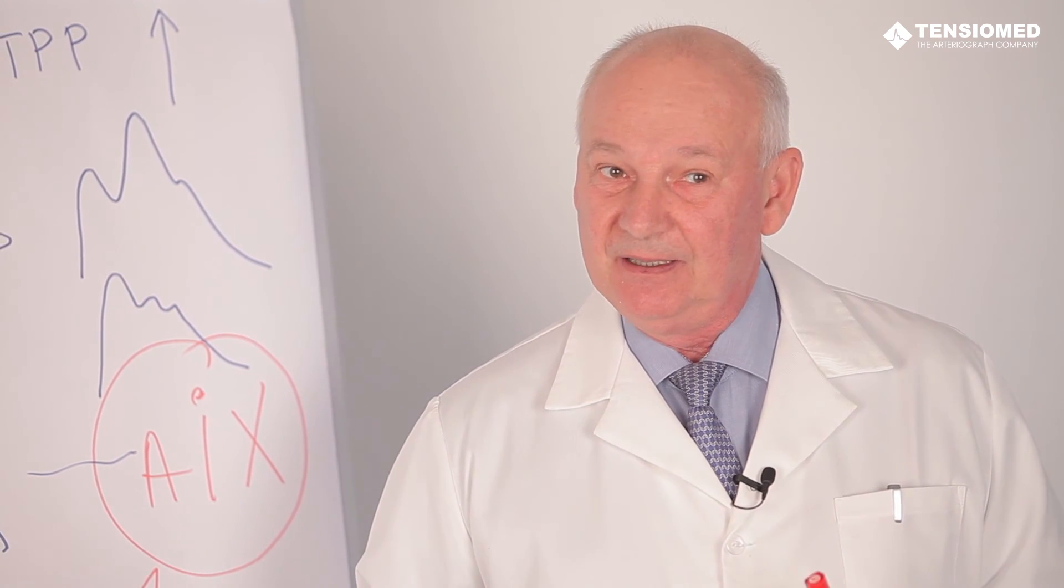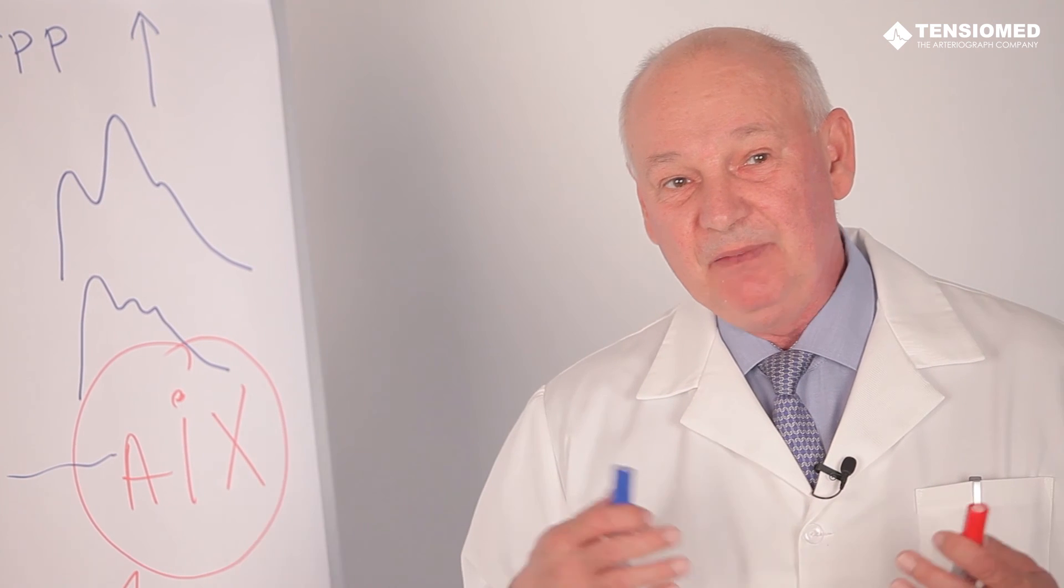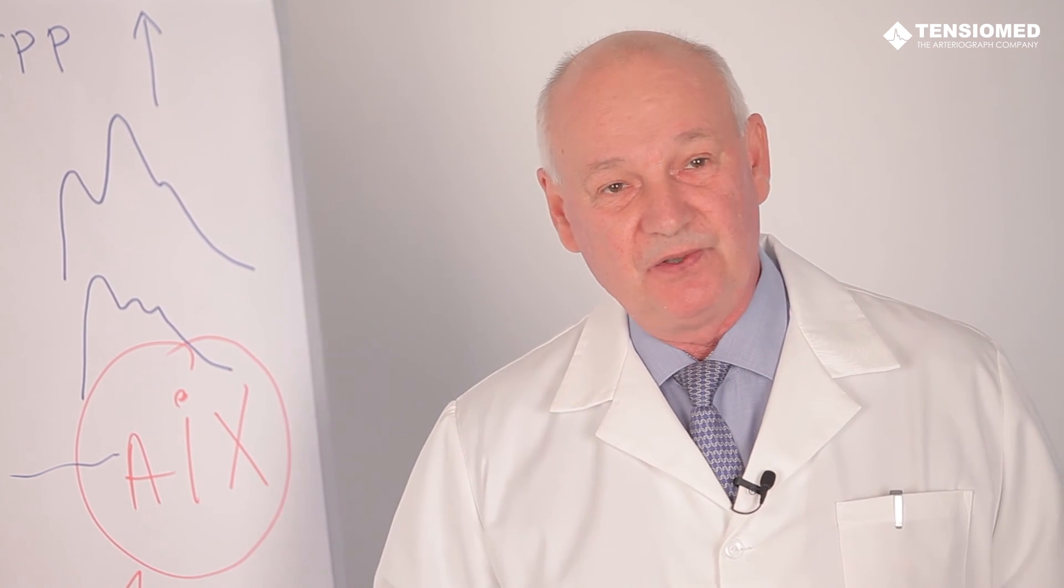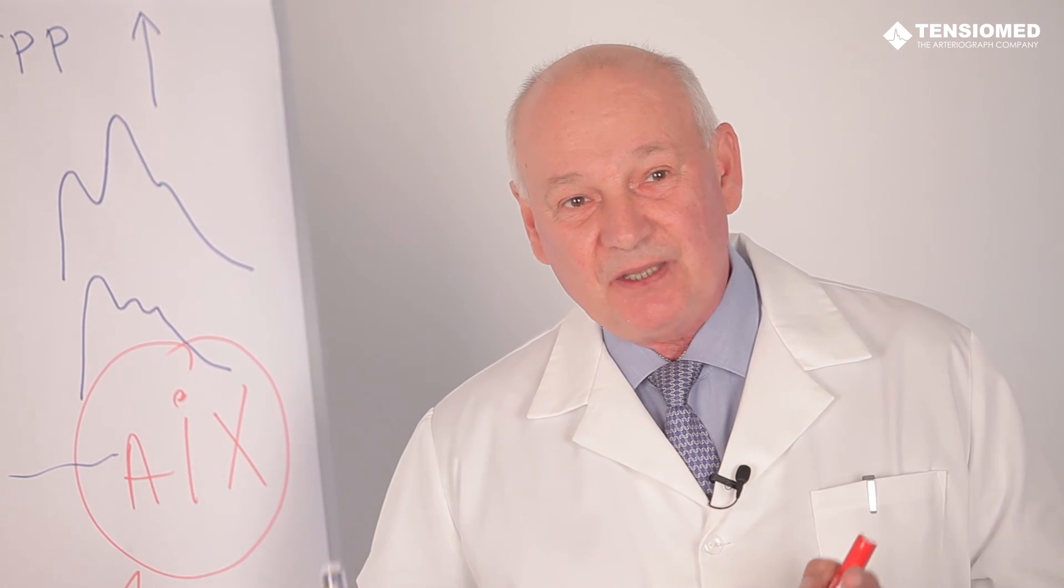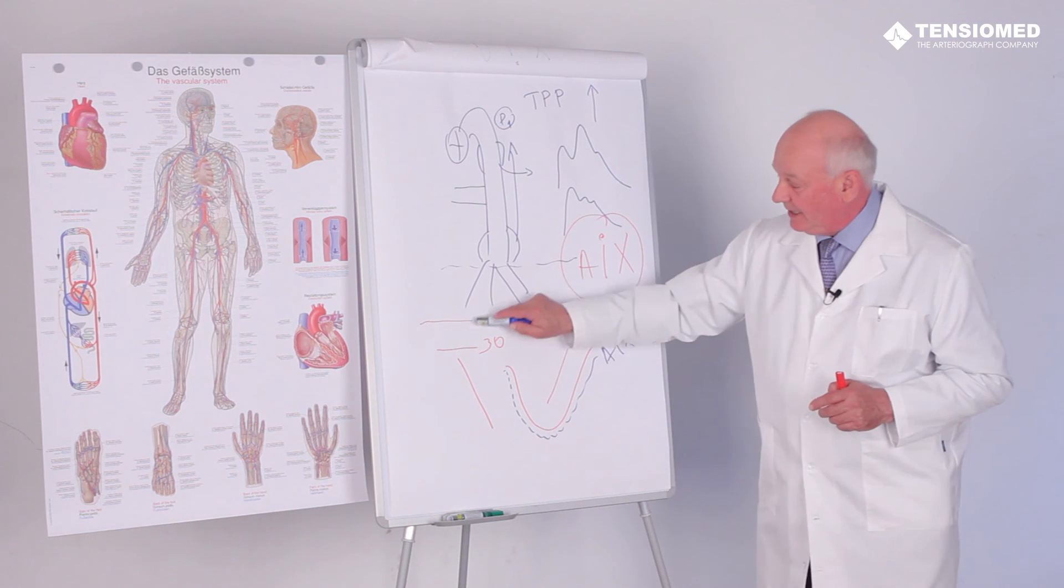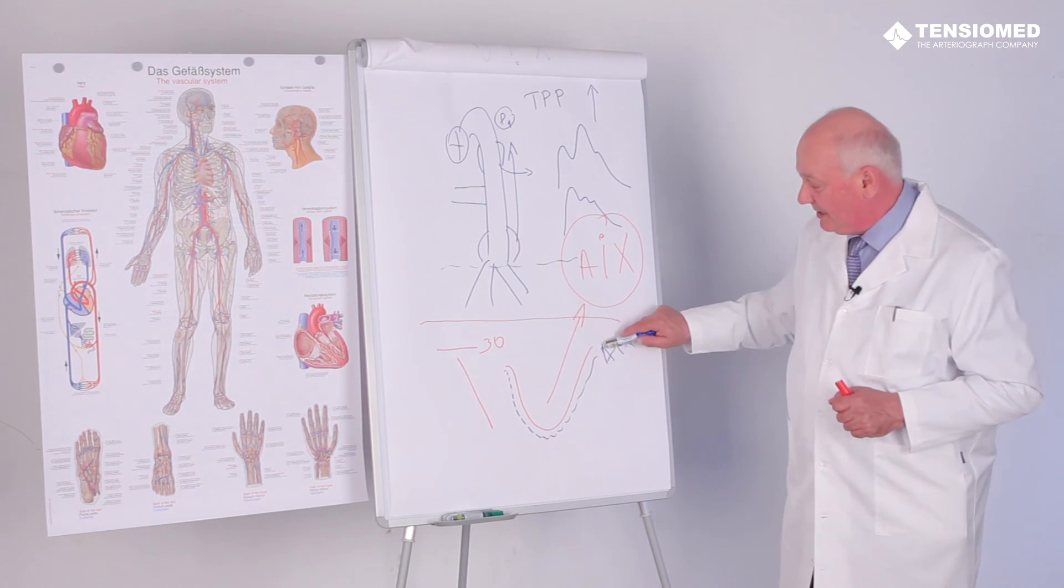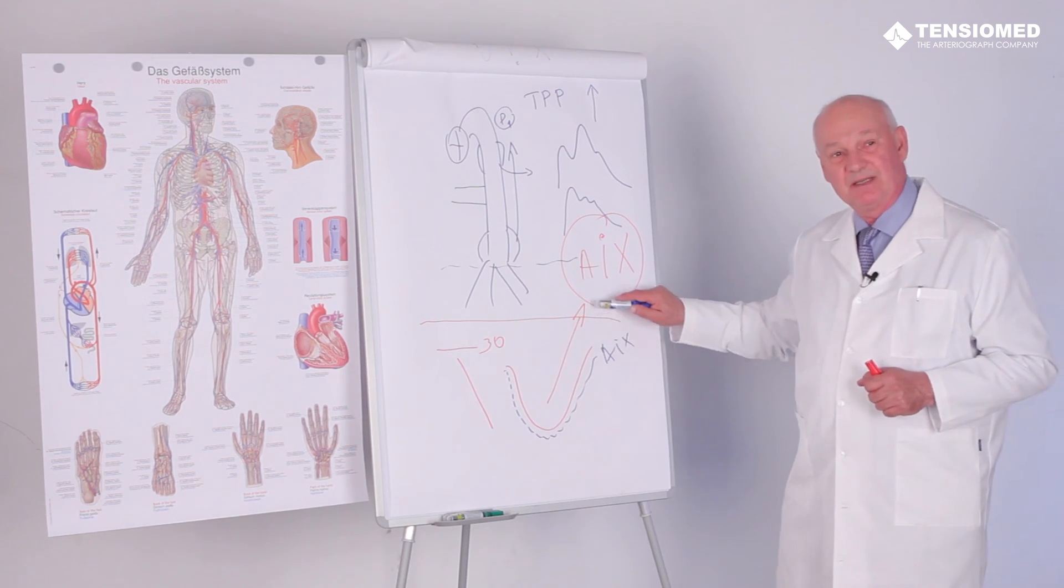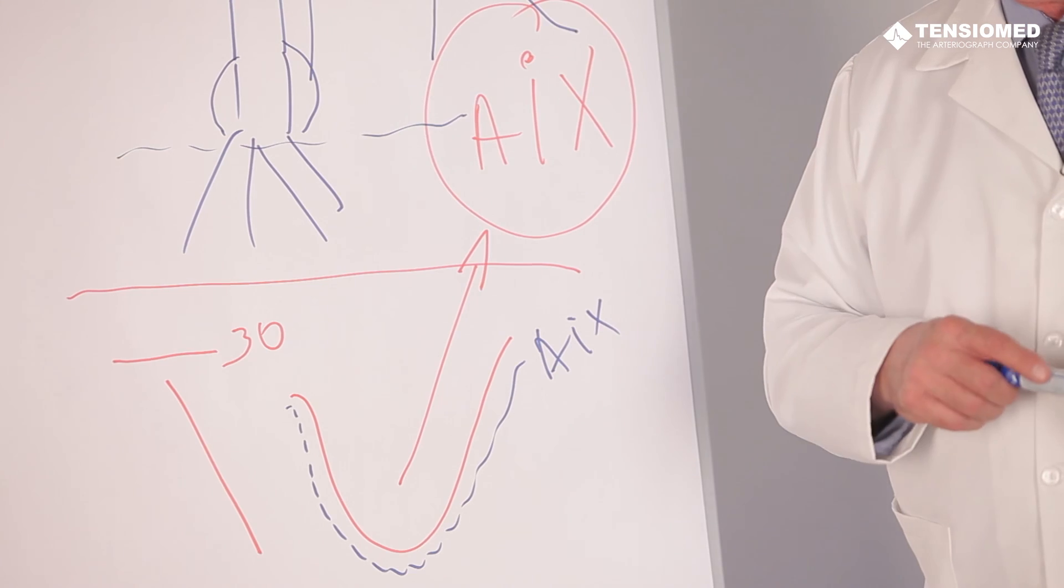The endothelial dysfunction, which is known to have the diminishment of the physiological nitric oxide synthesis, goes together with increased peripheral vascular resistance. Consequently, measuring the augmentation index and the peripheral vascular resistance is in relation to the development of endothelial dysfunction.